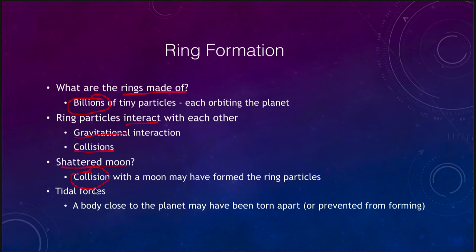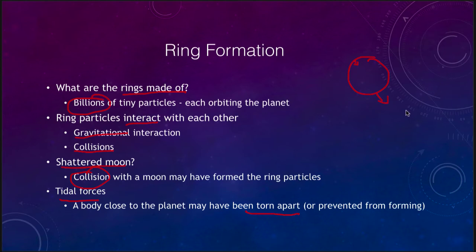Some sort of collision with a moon, or tidal forces, could explain the rings. An object close enough to the planet could be torn apart by tidal forces — the gravity on the near side being stronger than on the far side, since gravitational force depends on distance. If close enough, the object may not hold up structurally to a significant force on one side and a very small force on the other — essentially stretching it apart. Or particles may just have been prevented from forming in the first place.